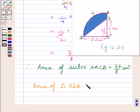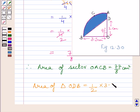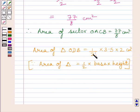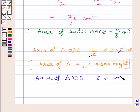Area of triangle equals half multiplied by base multiplied by height. Here, base is OB which is 3.5 cm and height is OD which is 2 cm. So area of triangle ODB equals half multiplied by 3.5 multiplied by 2 cm squared. The 2s cancel each other and we get area of triangle ODB equal to 3.5 cm squared.